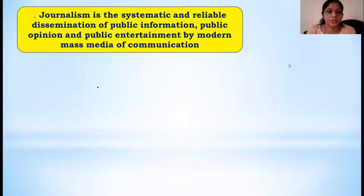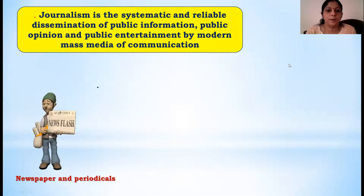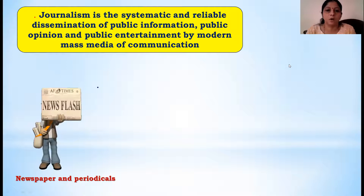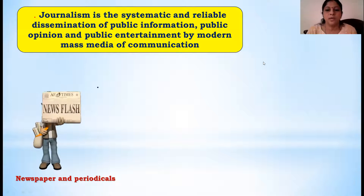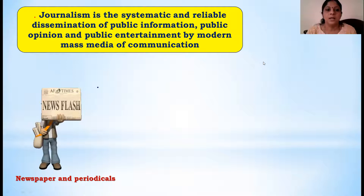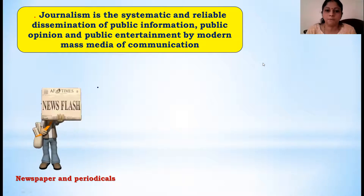Now we will see what is journalism. Journalism is the systematic and reliable dissemination of public information, public opinion, and public entertainment by modern mass media of communication. That means journalism acts as a bridge: they collect information happening around us, format it in a systematic and reliable way that is acceptable and useful to the people, and then disseminate it to the public through different mass media channels.